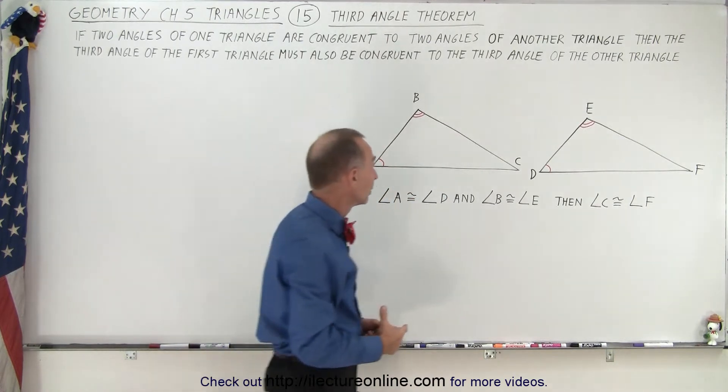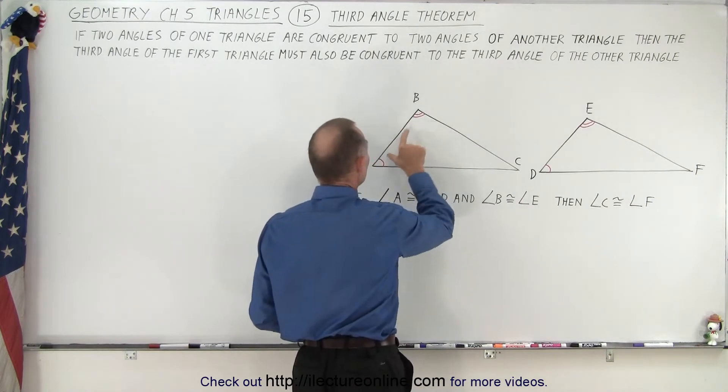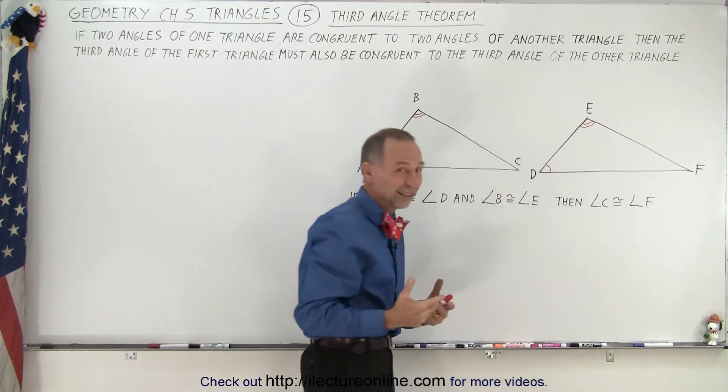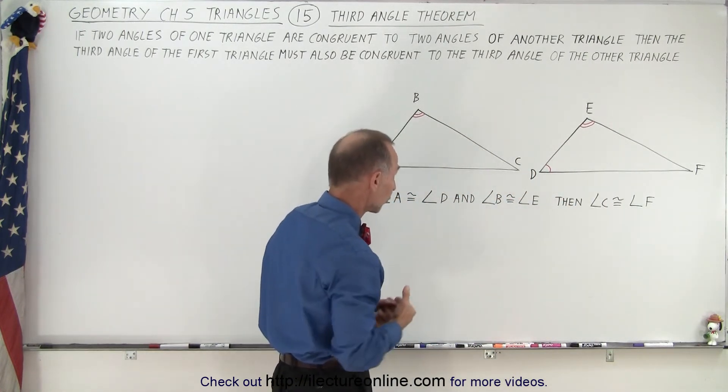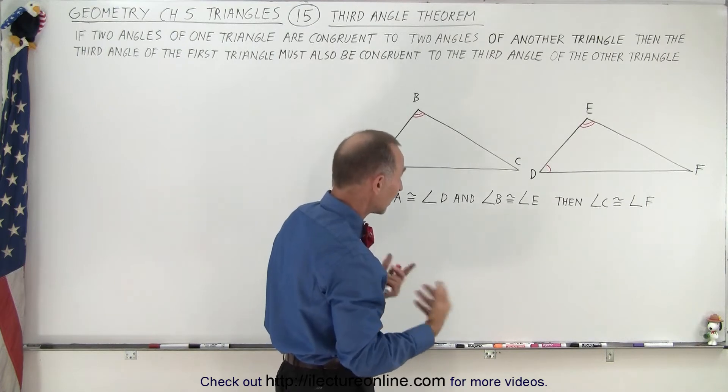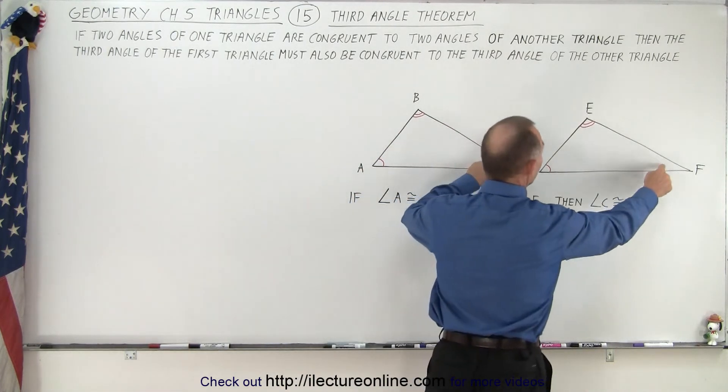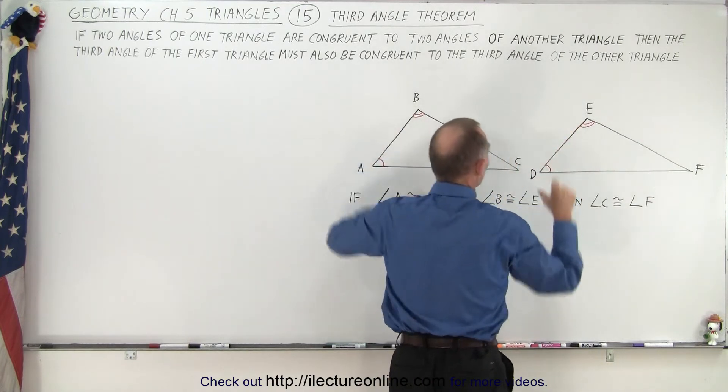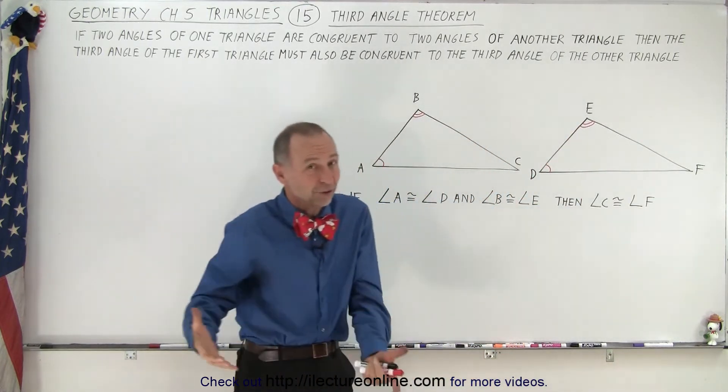true for the other triangle. If these measures of these two angles are equal to the measures of these two angles, in other words if those two sets of corresponding angles are congruent, then obviously the third angle in each of the triangles must be 180 degrees minus the sum of the measures of the other two, and therefore they must be the